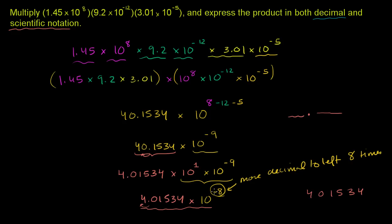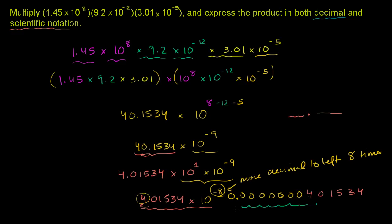Moving the decimal one place to the left gives a digit before the decimal, and then the remaining seven moves each add a zero. So I get 0.000000401534. In total, counting from the original decimal position, I've moved it eight places to the left — that's what multiplying by 10 to the negative 8 does.